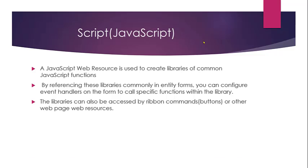A JavaScript web resource is used to create libraries of commonly used JavaScript functions. Once you've created a JavaScript web resource you can include it into a form and configure event handlers on the form to call specific functions within that particular library. The libraries can also be used by ribbon commands — that is the buttons — to trigger certain actions and configure display rules for the buttons.